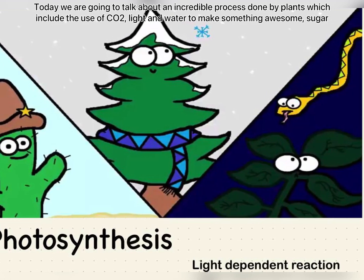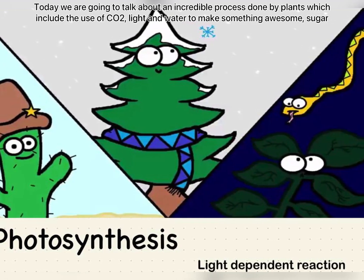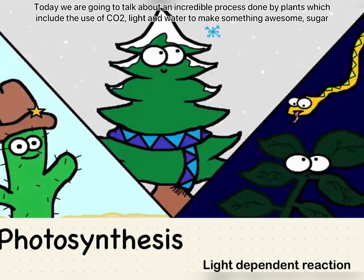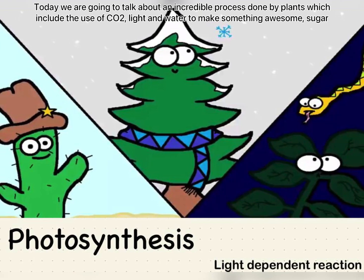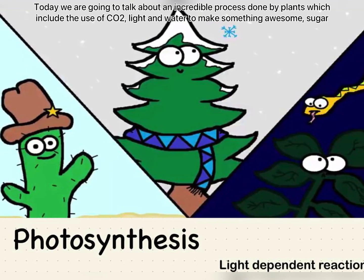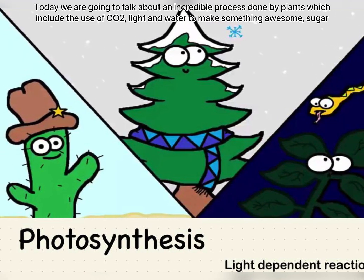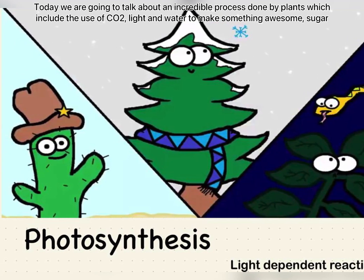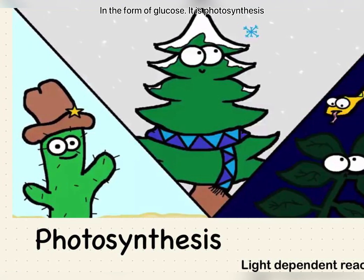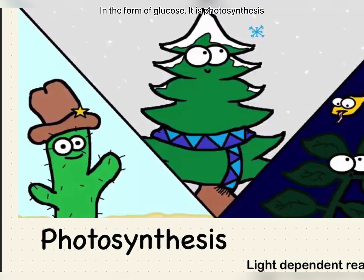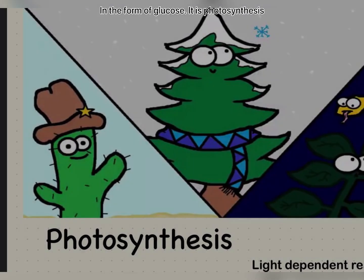Today we are going to talk about an incredible process done by plants which includes the use of CO2, light and water to make something awesome — sugar, in the form of glucose. It is photosynthesis.